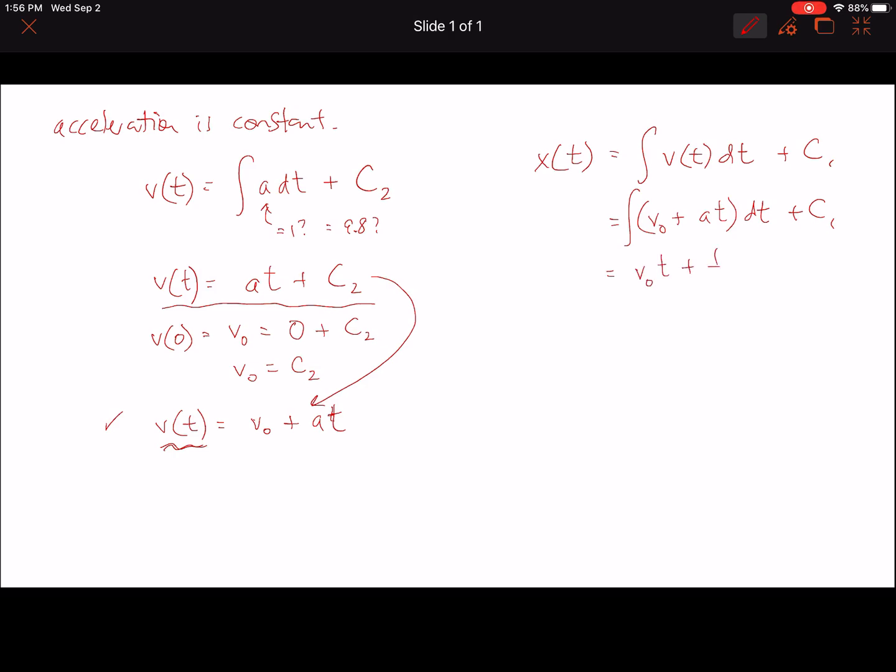And when we do that integral, we end up with v0 times time, we end up with one half a t squared, and we still have the constant of integration hanging out there. And again, like we did here, well, what do we want to call this, our position at zero time? Well, we call it the object's initial position.